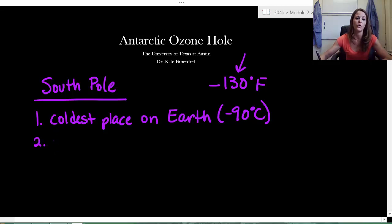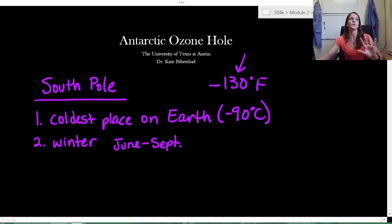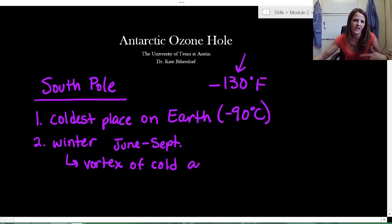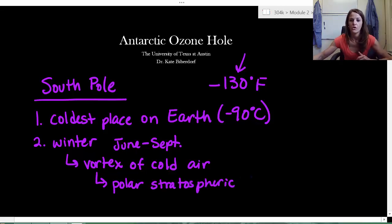Second thing we need to know about the South Pole, their winter exists from June to September. Now, their winter has something that's really cool because it is so cold. They essentially have a vortex of very cold air. You can maybe think of it as wind, but I think of it as just a circle of very cold air. And when this happens, they form these really awesome clouds. These clouds are called polar stratospheric clouds.